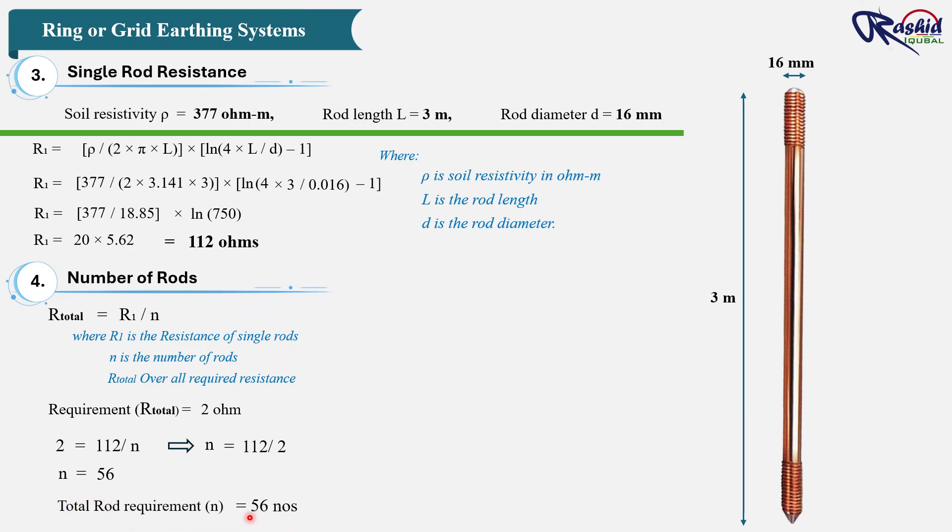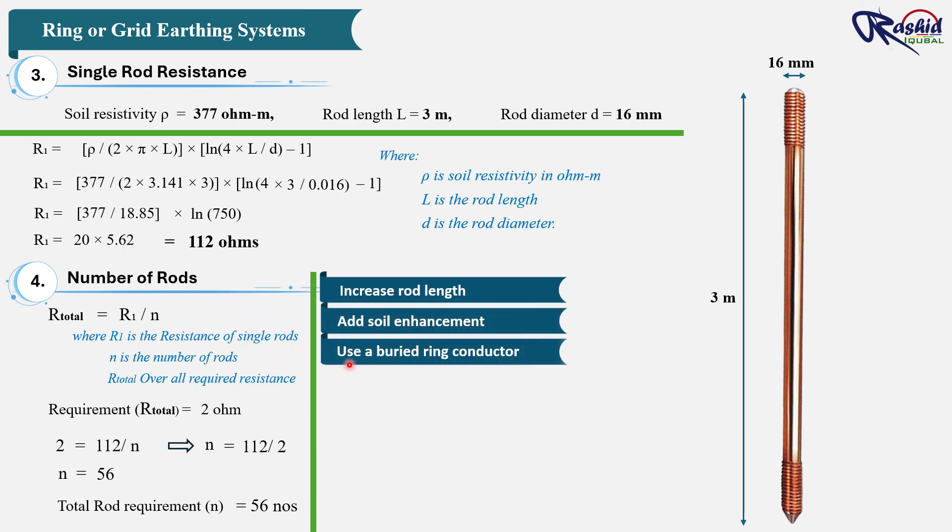But installing 56 rods is not practical. It would require a very large area, a lot of copper, and high installation cost. So it is also not economical for building projects. That's why instead of using too many rods, we try other practical methods like increasing rod length, improving the soil condition, or adding a buried copper ring or grid to reduce the overall resistance more efficiently.